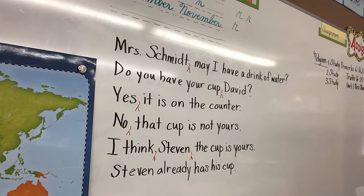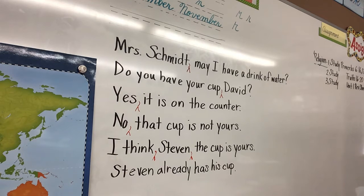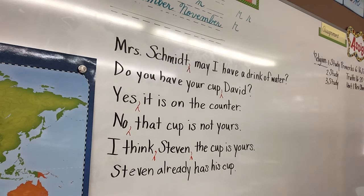What a brightly colored frog! Exclamatory. Do we need any commas? No — we're not talking to anybody. Insert exclamation mark at the end of that sentence. Its eyes are bright red and its feet are bright orange. Declarative — you're just telling us what color it is.